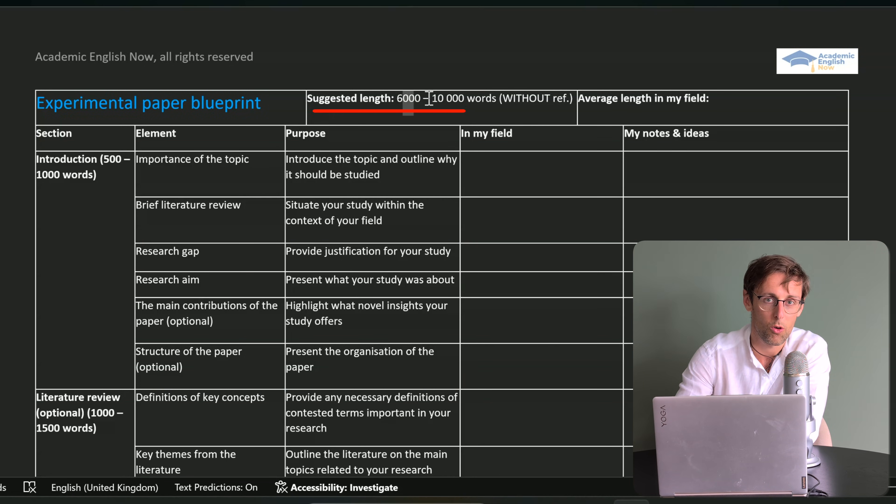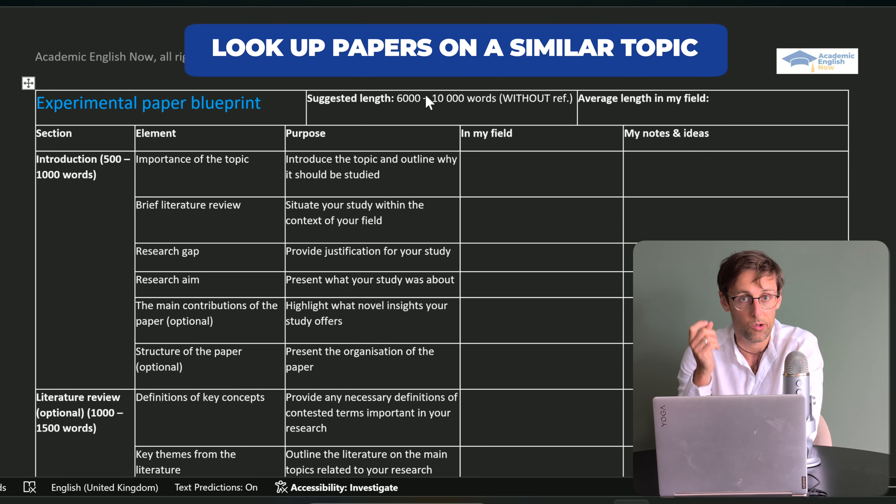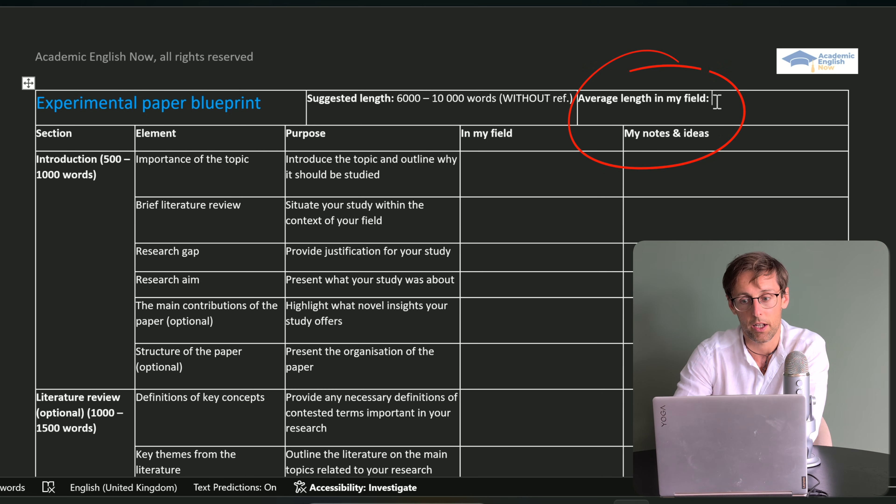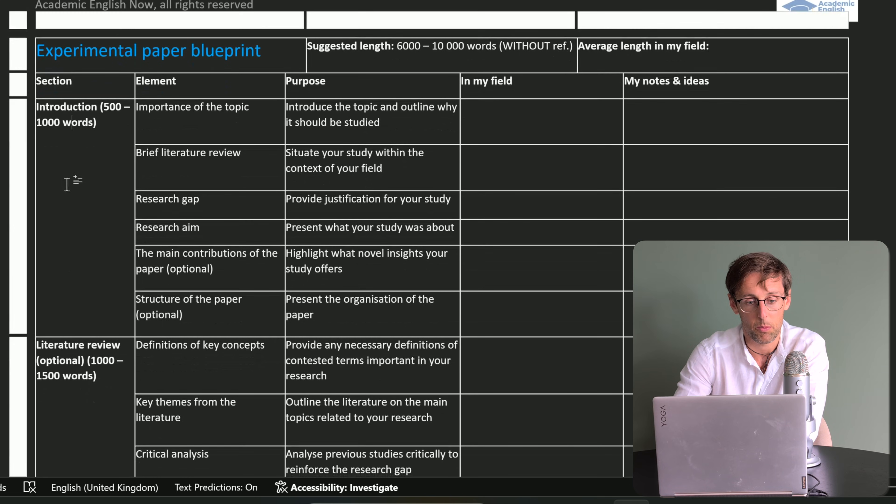The first thing you'll have to do to adjust this blueprint is to check the overall length of an empirical paper in your field. Look up papers on a similar topic that you're writing on in a similar journal, download five of those, and check what is the overall length so you can adjust the average length in here.